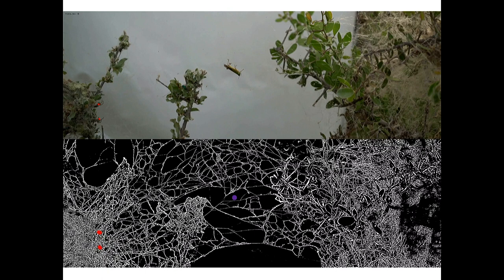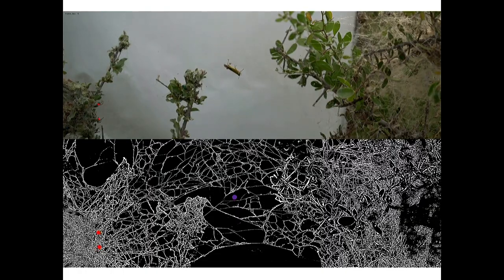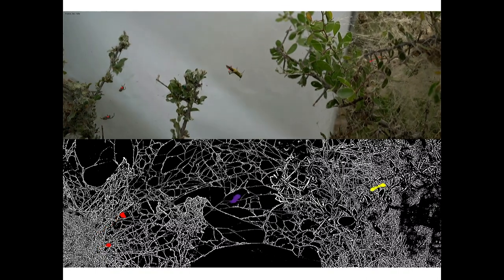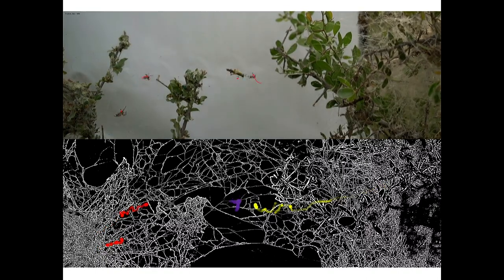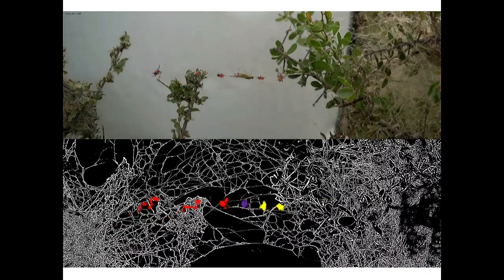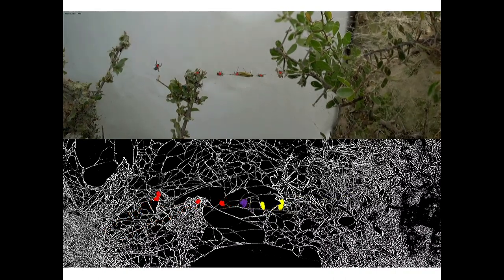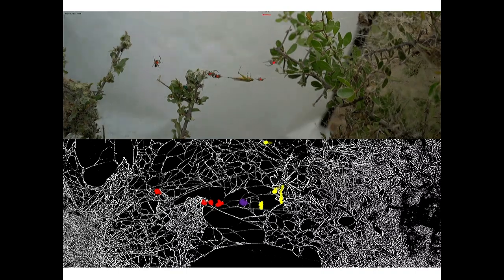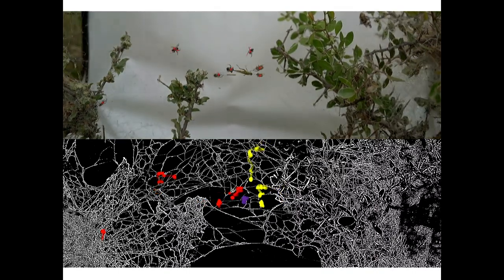We're using neural net approaches to detect individuals in very complex visual scenes — this is what we're moving towards in the fish as well: entirely unmanipulated approaches to tracking wild animals.